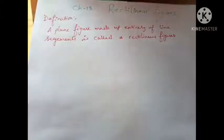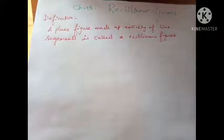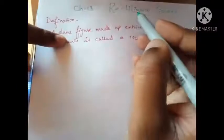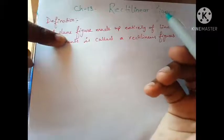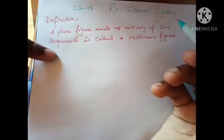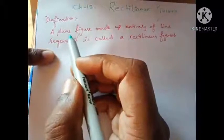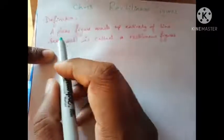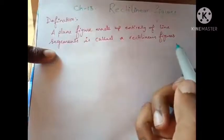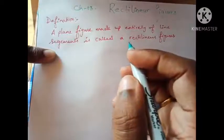Good morning students, I hope all of you are doing well. Today we'll be looking at a new chapter — Chapter 13: Rectilinear Figures. If I split the word into 'recti' and 'linear,' you would understand what the chapter is about. A rectilinear figure is a plane figure made entirely of line segments.